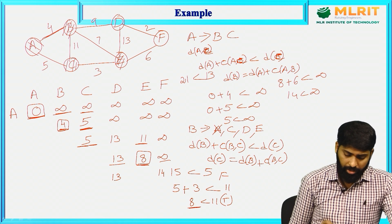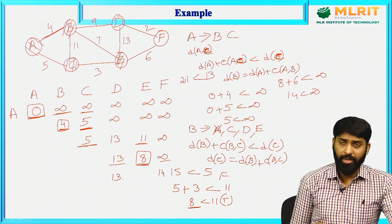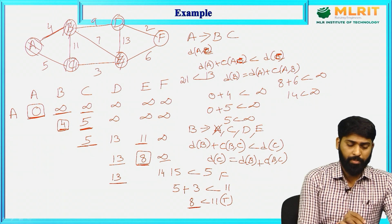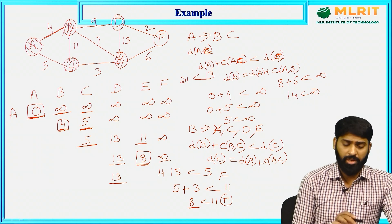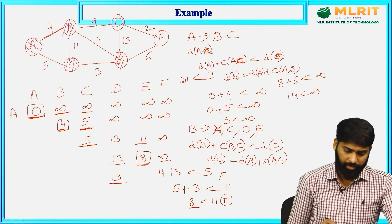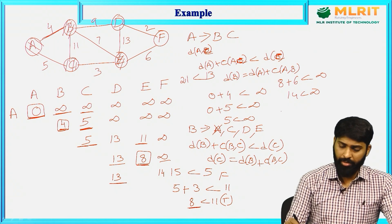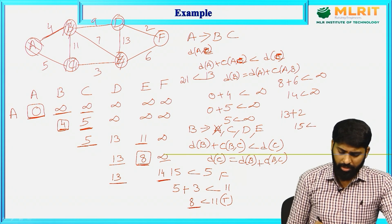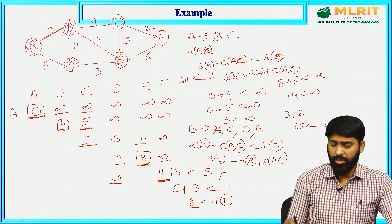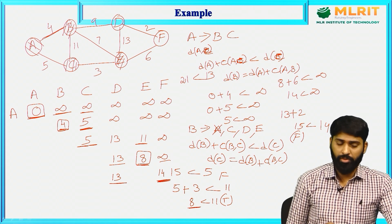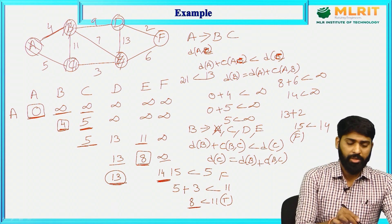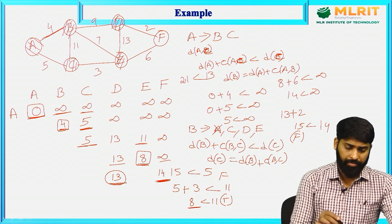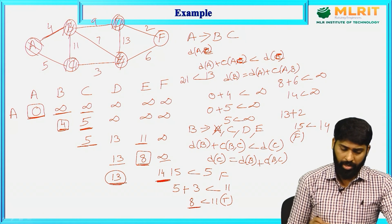Next, 13 and 14 — 13 is the smallest, select D. Adjacent vertices of D are B, E, F — B and E are visited. Only F remains. Distance(D) plus cost(D, F) = 13 plus 2 = 15, less than 14 — false. So it remains as 14. Mark D as visited. Finally F — adjacent vertices are D and E, both visited. Mark F as visited.